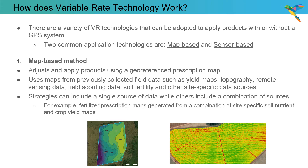So how does variable rate technology work? There are a variety of VR technologies that can be adopted to apply products with or without a GPS system. Two common application technologies are map-based and sensor-based. In a map-based method, equipment can adjust and apply products using a geo-referenced prescription map.